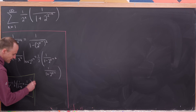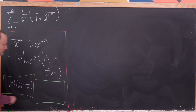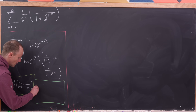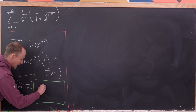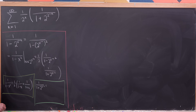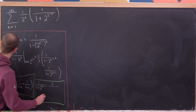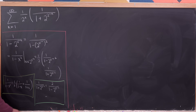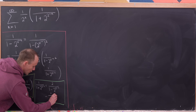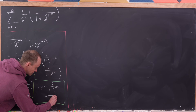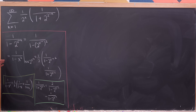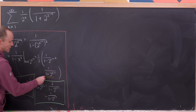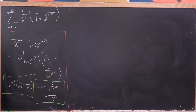So 1 over 1 plus 2 to the 2 to the minus n equals 2 over 1 minus 2 to the 2 to the 1 minus n, minus 1 over 1 minus 2 to the 2 to the minus n. That comes from solving the partial fraction decomposition we just did for the underlined term.